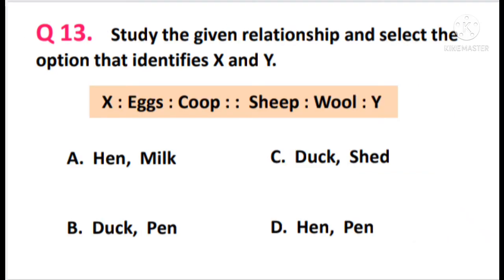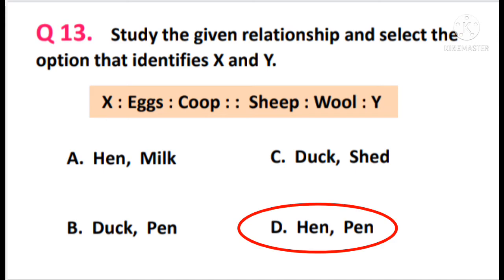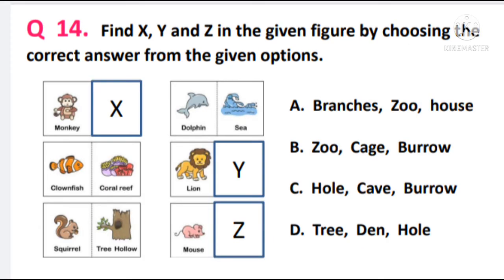Question 13. Study the given relationship and select the option that identifies X and Y. The relationship is: X is to eggs is to coop, proportionate to sheep is to wool is to Y. The answer is option D — pen. So for X it will be hen and for Y it will be pen. Hen is the animal, eggs its product, and coop its house. Similarly, for sheep: sheep, wool, and the house of sheep — pen.